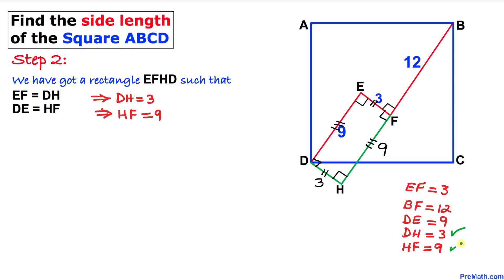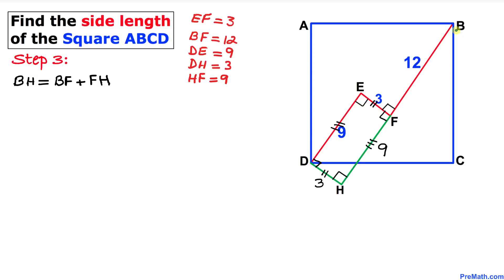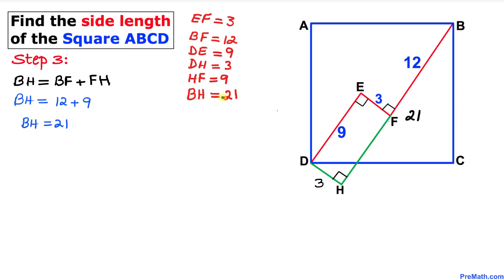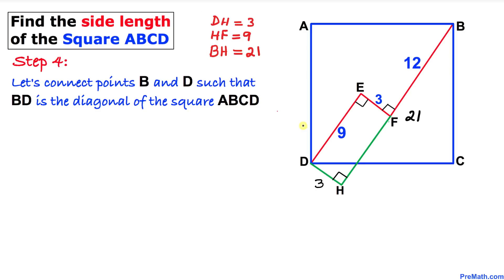Now we observe that BH equals the sum of BF plus FH. BF is 12 and FH is 9, so BH equals 12 plus 9, which is 21. Therefore BH turns out to be 21 units.